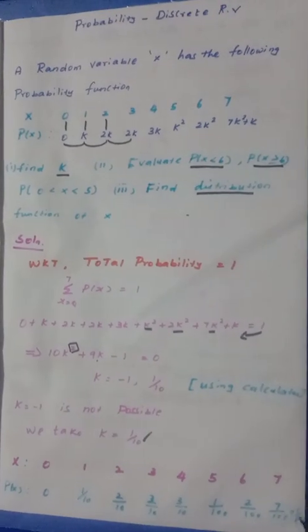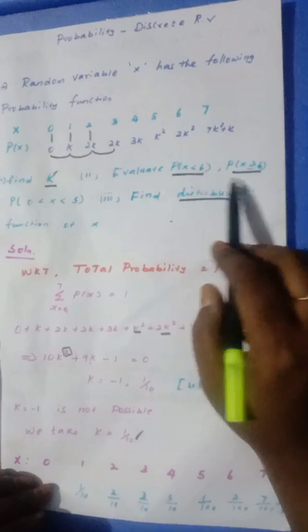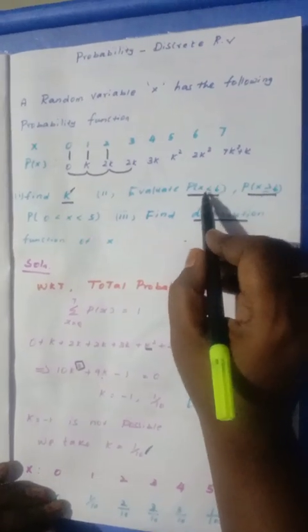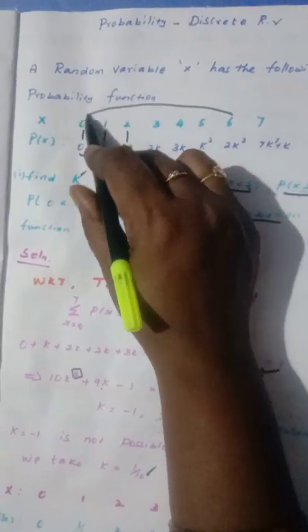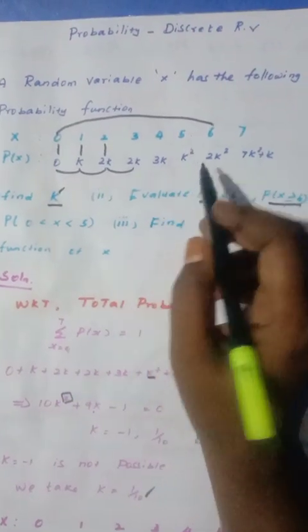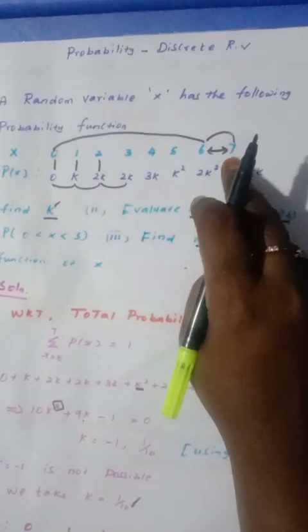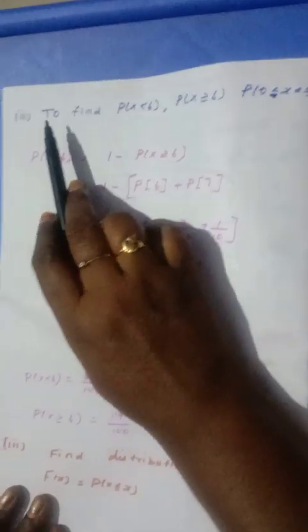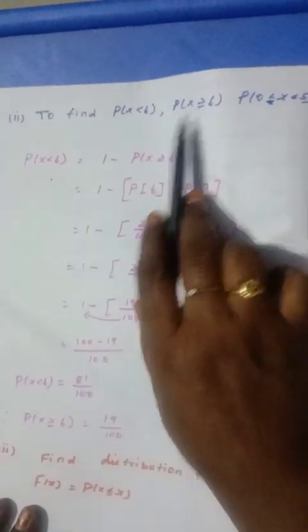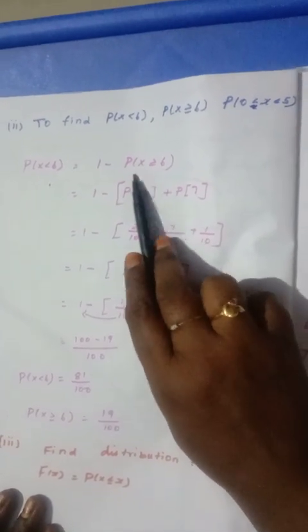K value is 1 by 10. Reconstructing: 7 by 100 plus 1 by 10. Now we start computing P(x less than 6) by adding the relevant P(x) values from the table.